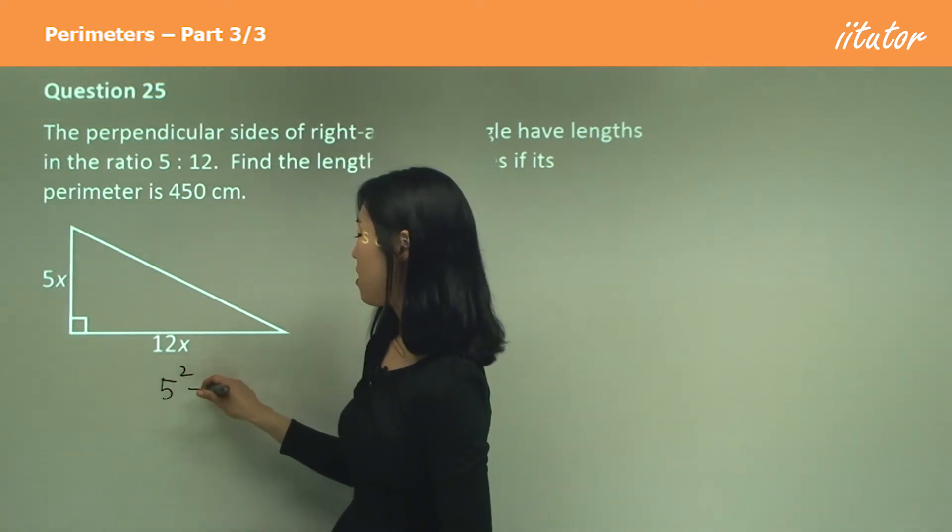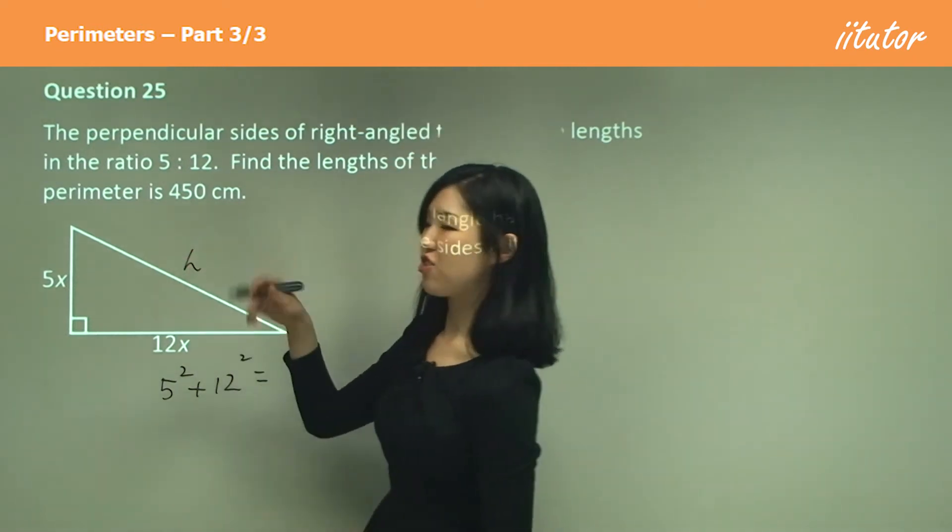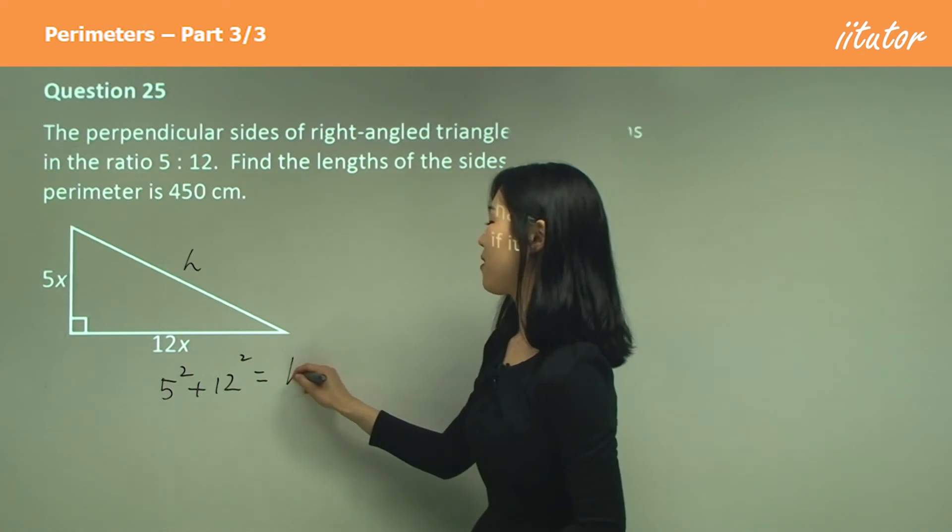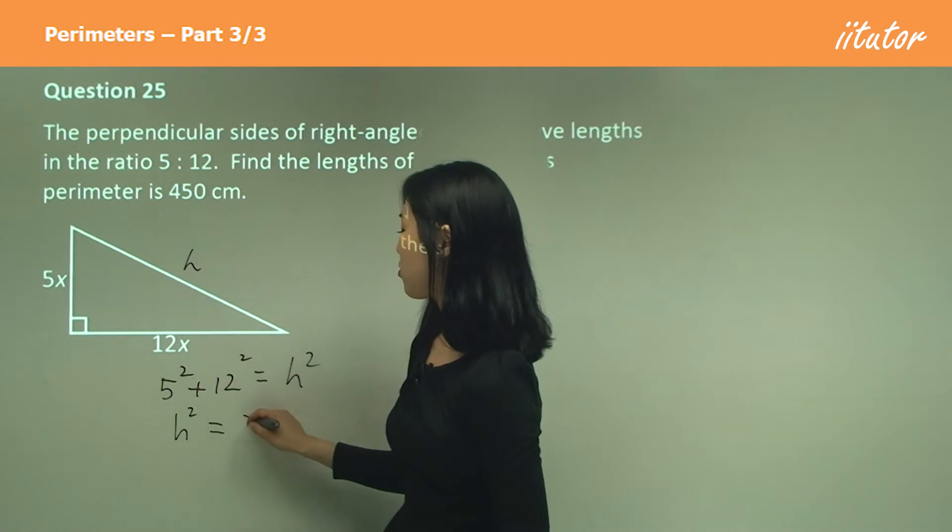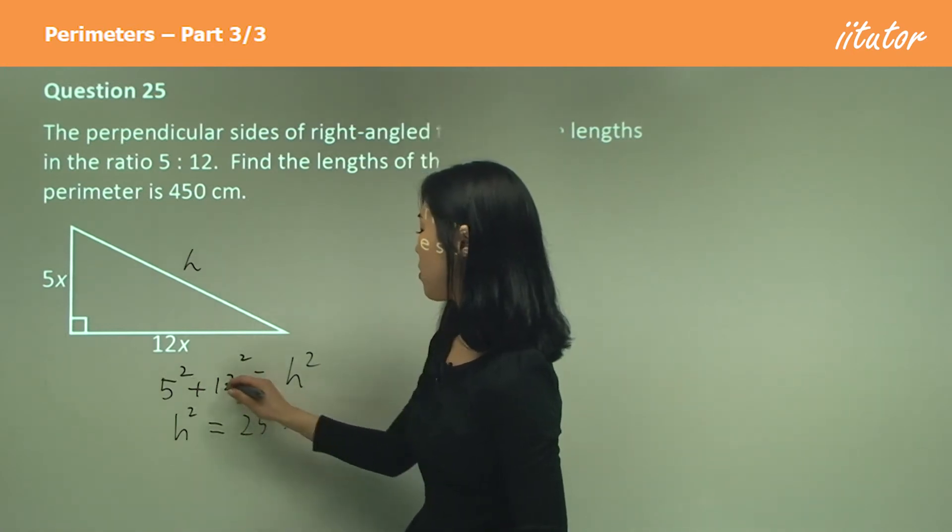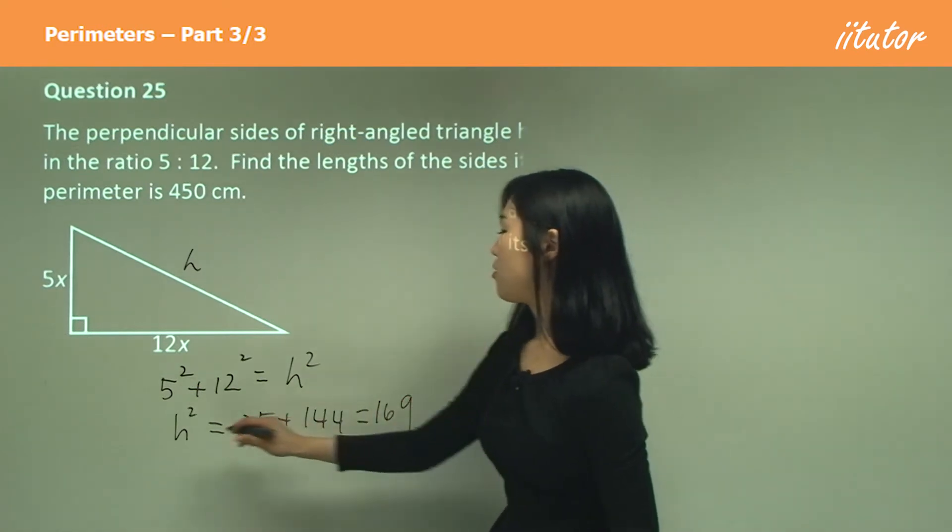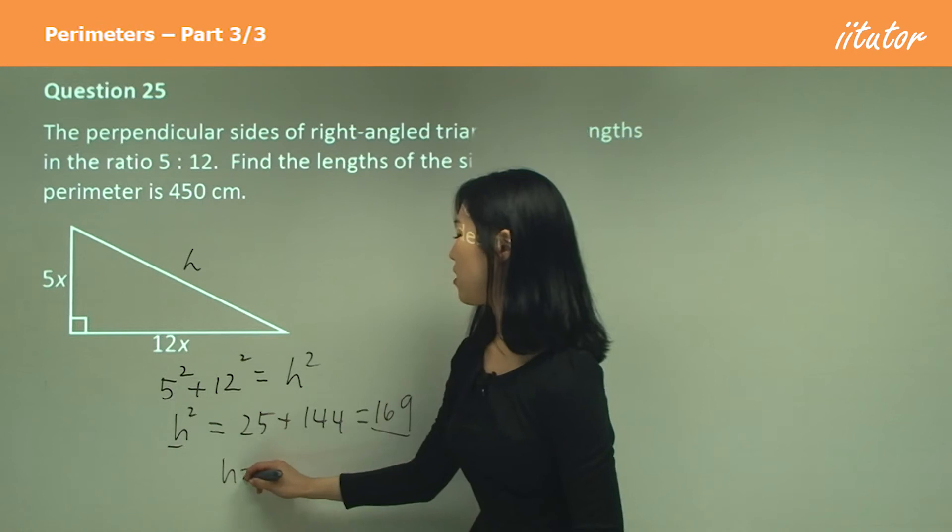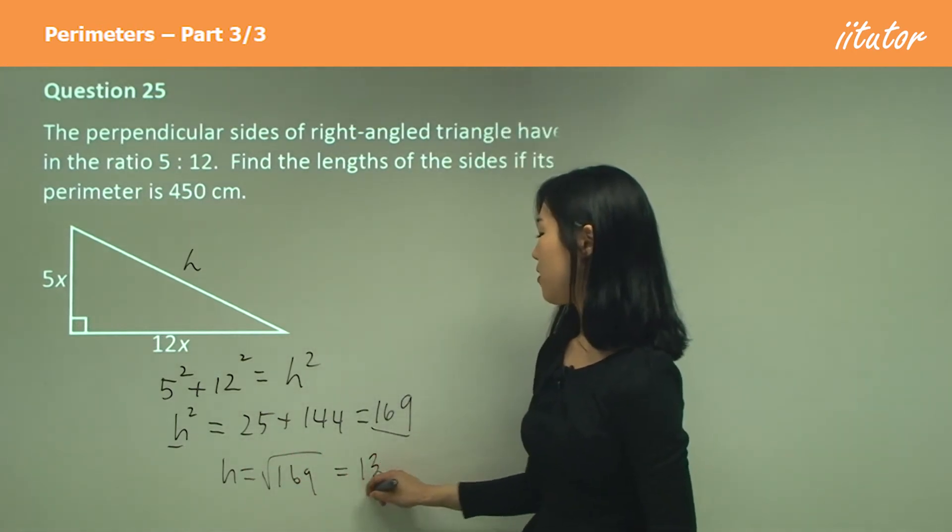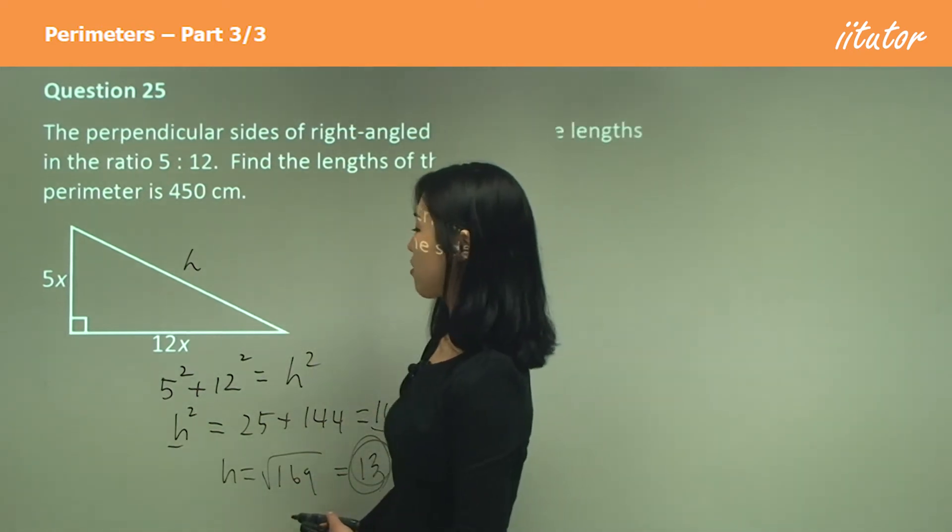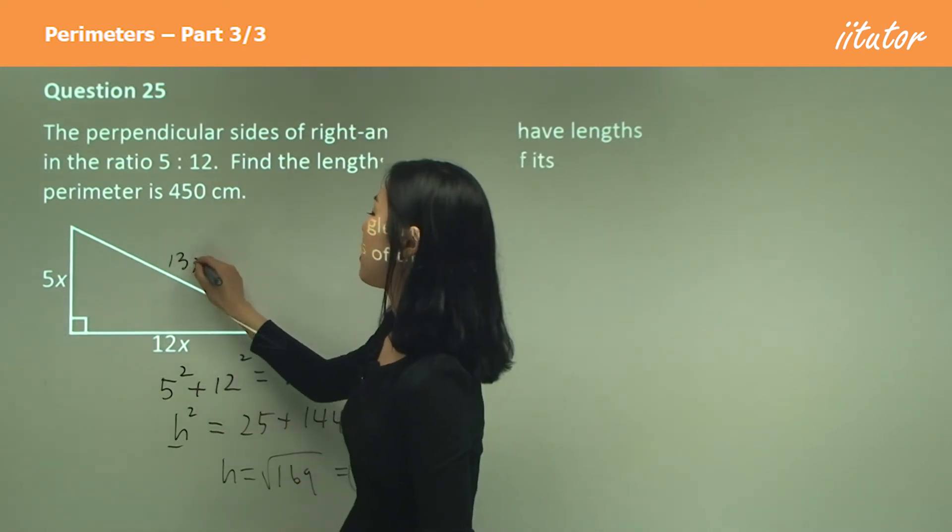I'm going to go 5 squared plus 12 squared. Let's call this side h, for hypotenuse. So it's going to be h squared. 5 squared is 25 and 12 squared is 144, which equals 169. So if h squared is 169, h is root 169, which gives 13. So h is 13, but I'm going to replace it with 13x.